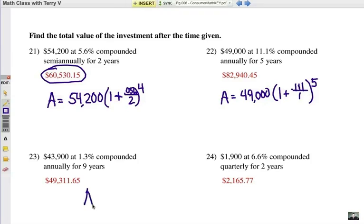Number 23. Principle, 43,900. You're going to multiply that by 1 plus. The 1.3% is .013. And it's compounded annually, so once a year, divided by 1. And once a year for 9 years means it will be compounded 9 times.